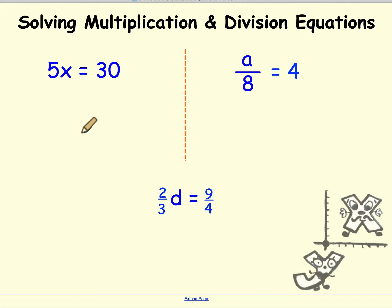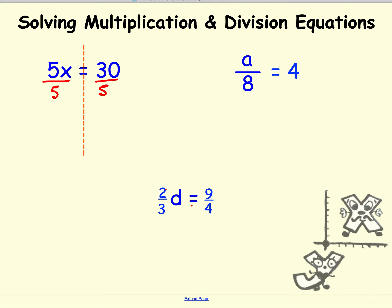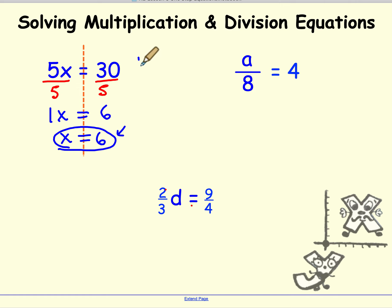Other basic operations are multiplication and division, so let's look at those. The basic steps are the same: do the inverse operation to both sides, then simplify and state the solution. The first equation says 5 times x equals 30. The inverse of multiplying is to divide, so I divide by 5 on both sides. 5 divided by 5 makes 1, and 30 divided by 5 is 6. The identity property for multiplication says 1 times x is just x, giving me x equals 6. My check: 5 times 6 gives me 30.